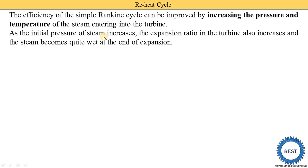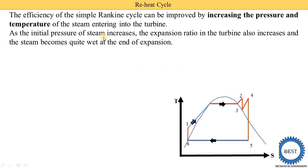But when we increase the pressure, at the end of the expansion, wet steam is achieved. We understand this using the TS diagram. This is the temperature versus entropy diagram. The middle region inside the saturation curve indicates the dryness fraction — at point six, dryness fraction is zero meaning 100% liquid, and at the saturated vapor line dryness fraction is one. In between, the value ranges from zero to one, increasing as we move to the right.